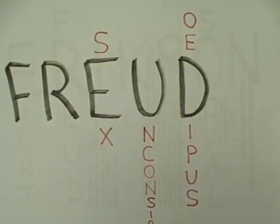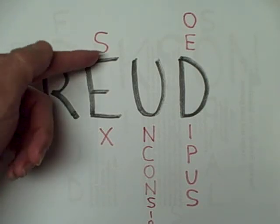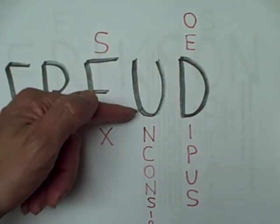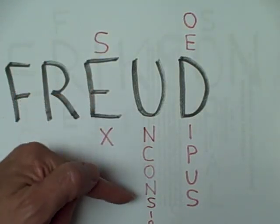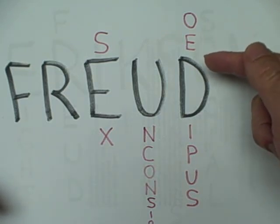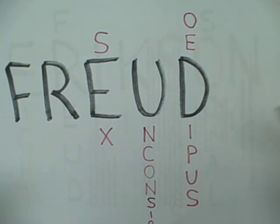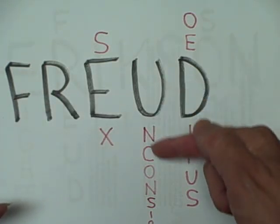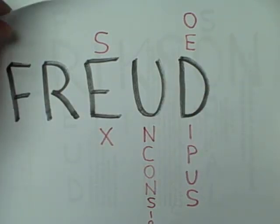Let's start with the psychoanalytic theory of Sigmund Freud. What do you have to remember about Freud? It's all sex and unconscious drives, and this is typified by the Oedipus complex. So when you see Freud, think: sex, unconscious, Oedipus.